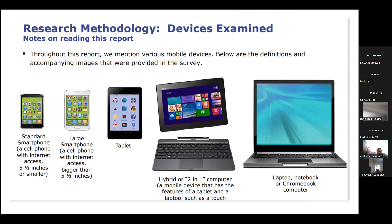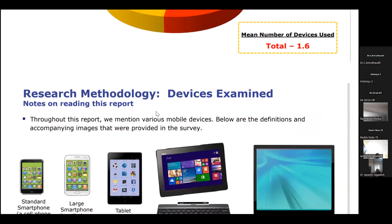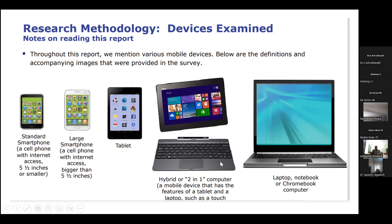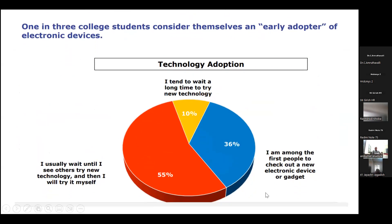A critical survey was done to determine what devices were examined to arrive at this pie chart. Throughout the report, various mobile devices are mentioned, including standard smartphones, sophisticated advanced smartphones, tablets, laptops, and desktops. This survey data was collected to understand the distribution of device ownership among students and accordingly plan the LMS accessibility strategy.